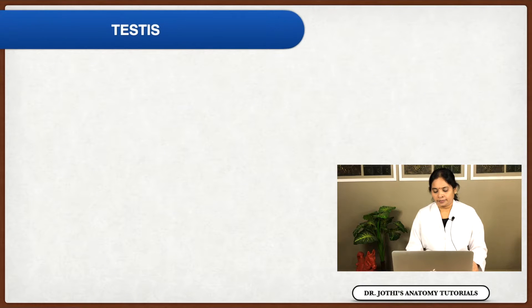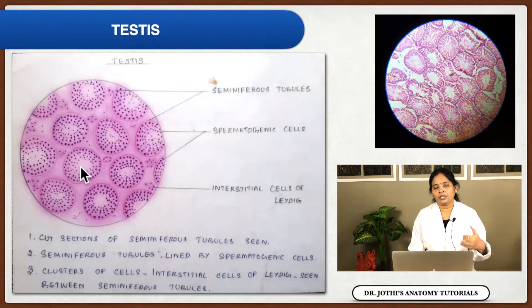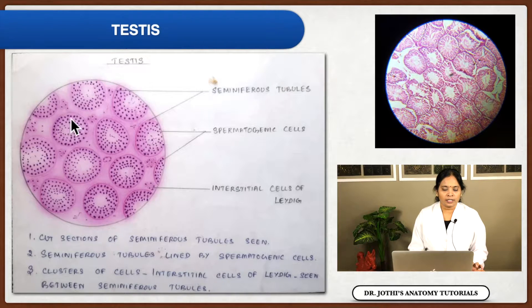Welcome students. We are going to see the histology of the male reproductive system. In a slide, we will typically see the testis, epididymis, vas deferens, and accessory sex glands — seminal vesicle and prostate. Starting with the testis, it is the male sex gonad. As a gonad, it is surrounded by a capsule.